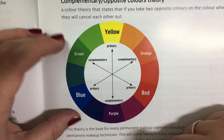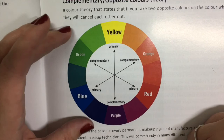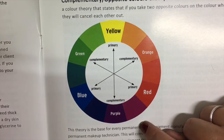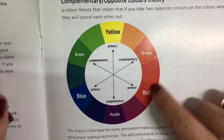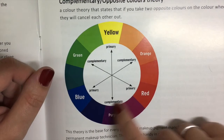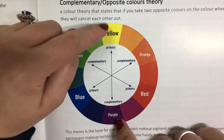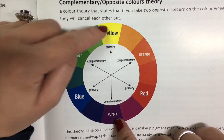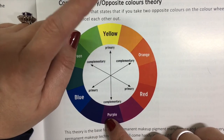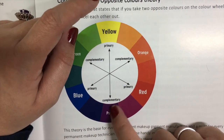For example, like a khaki color as I showed in the other video. The same goes if they have red eyebrows. If they have purple eyebrows, then you want to use a more yellow-based pigment to cancel the purplish look.